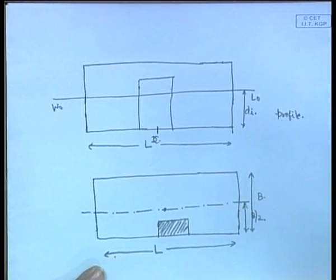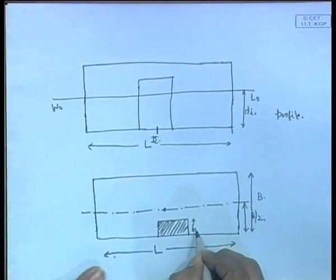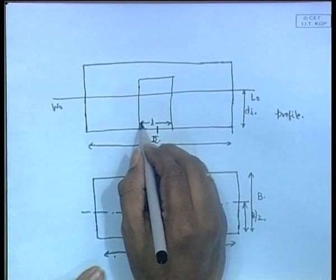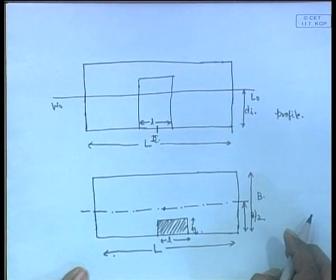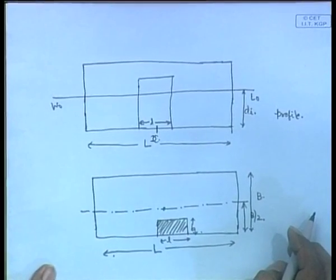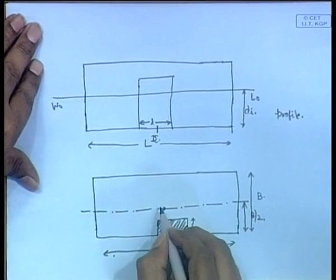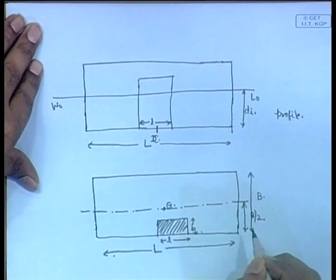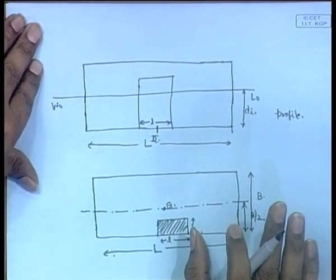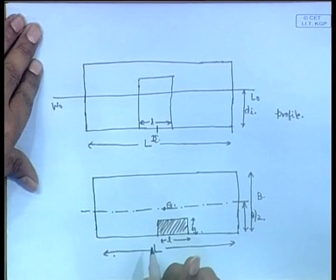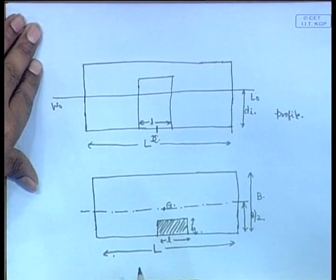Let us consider its dimensions to be b - the breadth to which it is flooded - and its length to be l. Initially the ship is in the upright condition; the center line is here, and this will be G, the position of the center of gravity. The position of the center of gravity does not change because all calculations will be based on the method of loss of buoyancy.